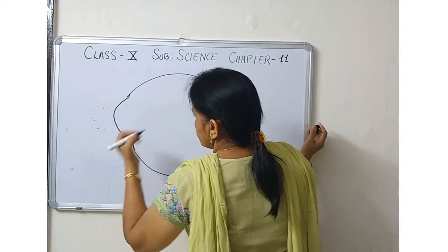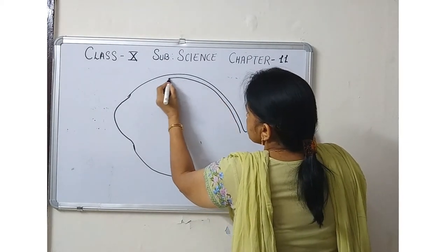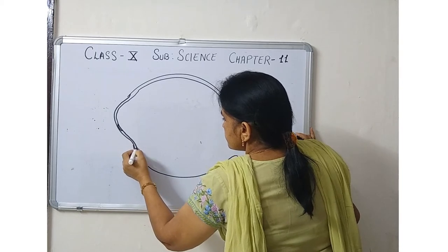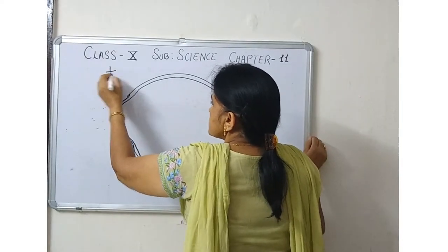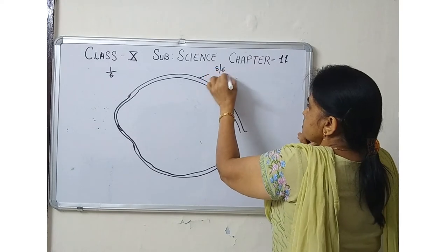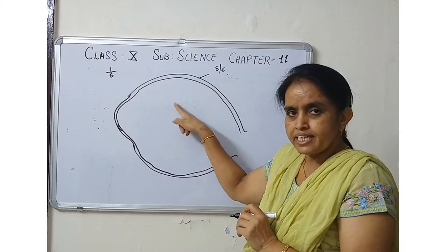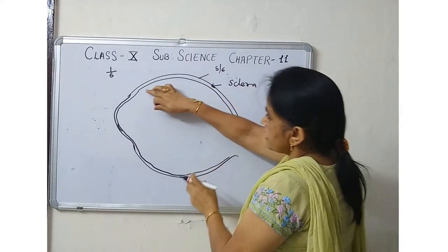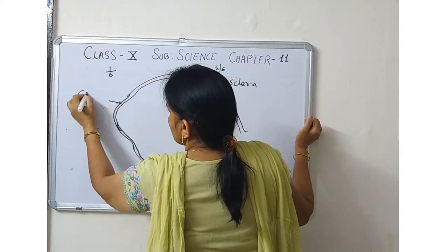The outermost layer is called the fibrous layer. It starts from the back and slightly bulges outward at the front. The portion we see from outside — only 1/6th part is visible; the remaining 5/6th is inside the bony cavity. This outermost fibrous layer is white in color. The posterior part is called the sclera, and the front transparent portion is called the cornea.